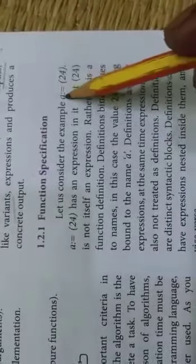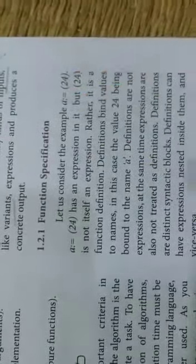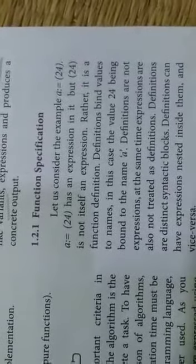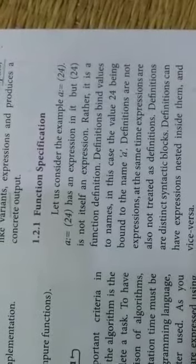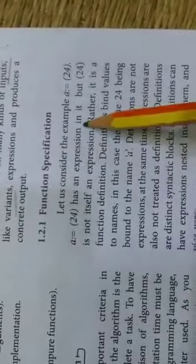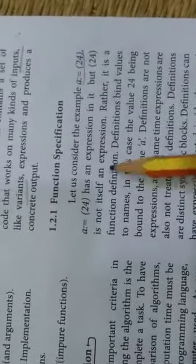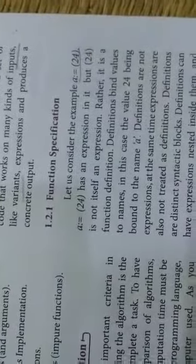Expressions will finally produce a correct output, so input and output is based on the function access. What examples are we going to do? Function specification: for example, a equal to 24 values. This is a complete expression. This is a variable, so if the variable is an expression for 24 and the values are specific to the expression, this is a full whole setup — this is a function definition.